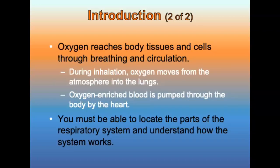Brain tissue will begin to die within four to six minutes without oxygen. Oxygen reaches body tissues and cells through two separate but related processes: breathing and circulation. During inhalation, oxygen moves from the atmosphere into the lungs, crosses the alveolar membrane, and attaches to hemoglobin by the process called diffusion. Red blood cells carry hemoglobin and therefore oxygen through the body, ultimately delivering it to the capillaries to oxygenate the body's cells.